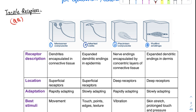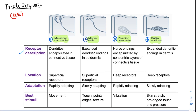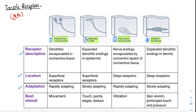We have four important tactile receptors. The first is Meissner's corpuscles, second is Merkel's cells, third is Pacinian corpuscles, and finally the Ruffini ending. We are going to discuss them under the following subheadings: receptor description, location, adaptation, and best stimuli.